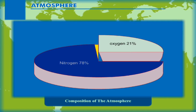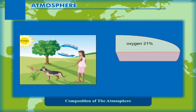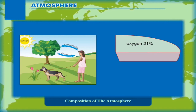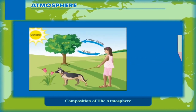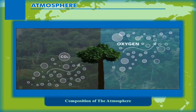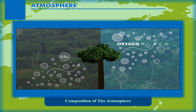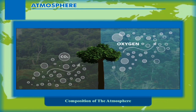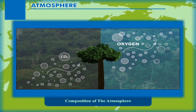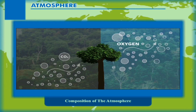Oxygen ranks as the second most plentiful gas in the atmosphere. It is essential for the survival of plants and animals; living beings need oxygen to breathe and stay alive. Green plants produce oxygen during the process of photosynthesis. Carbon dioxide is used by plants for making food, so carbon dioxide consumed during photosynthesis is replaced by the carbon dioxide released through respiration by organisms.